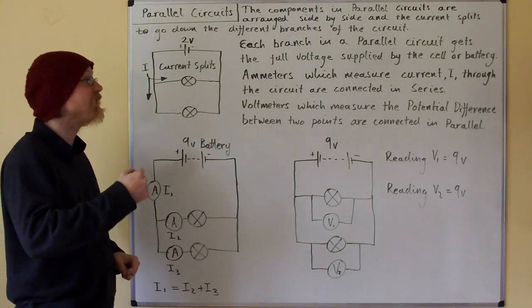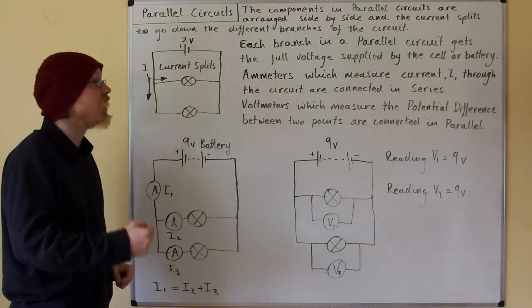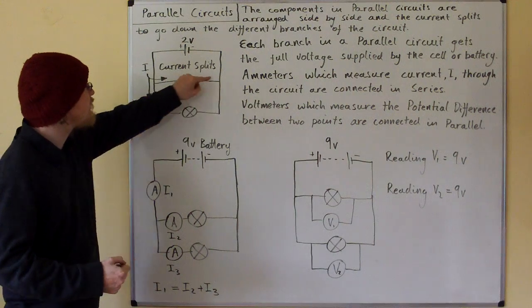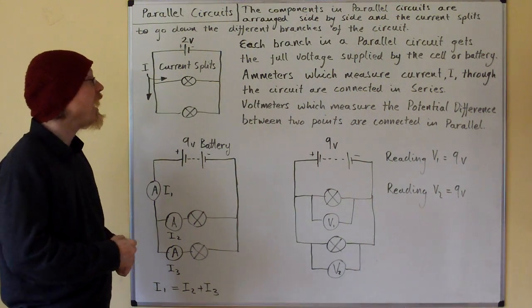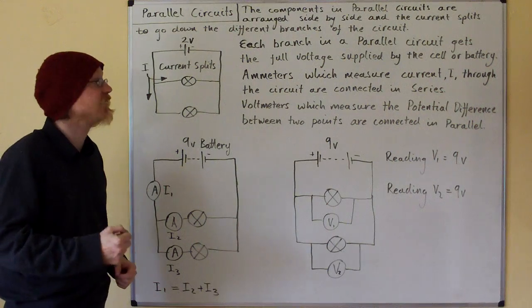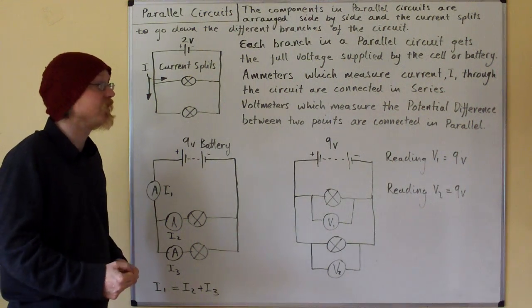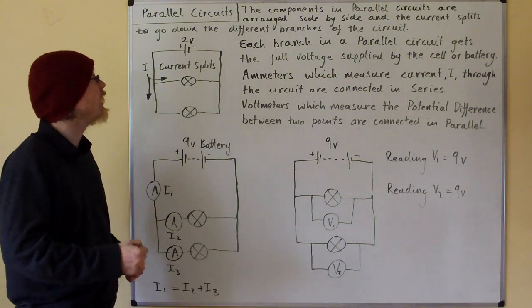The components in parallel circuits are arranged side by side and the current splits to go down the different branches of the circuit. Each branch in a parallel circuit gets the full voltage supplied by the cell or the battery.